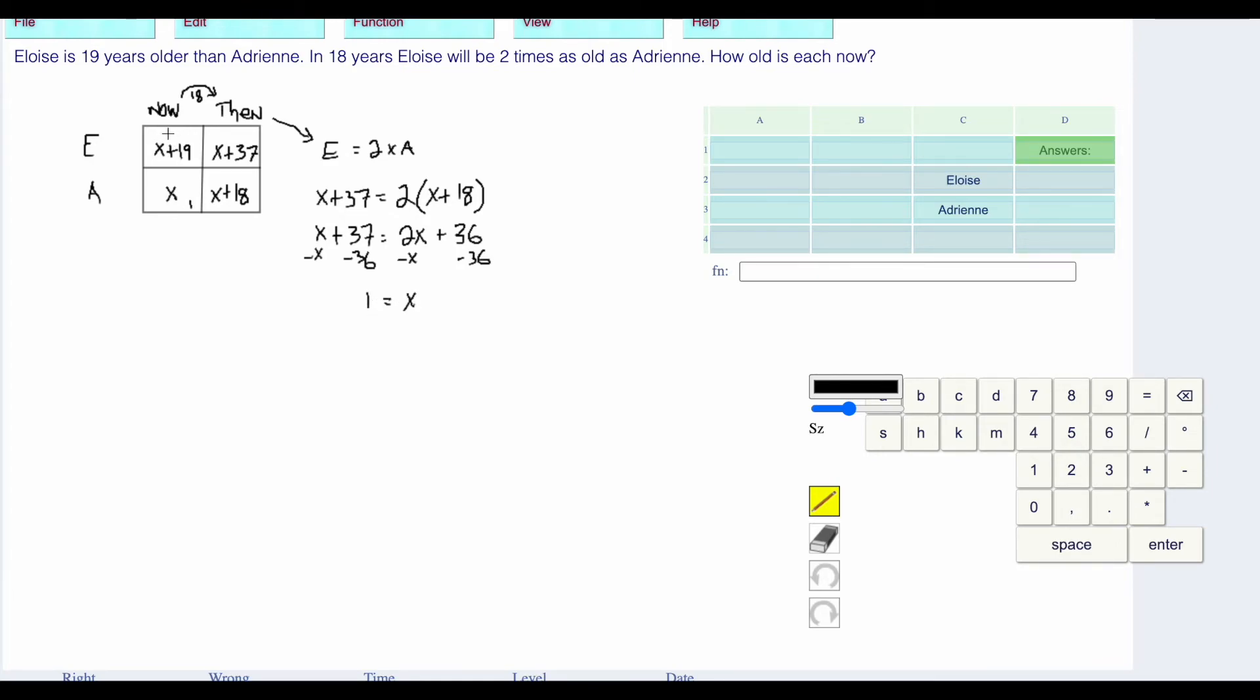Adrian is 1 and 1 plus 19 is 20. Eloise is 20. Eloise is 20 and Adrian is 1.